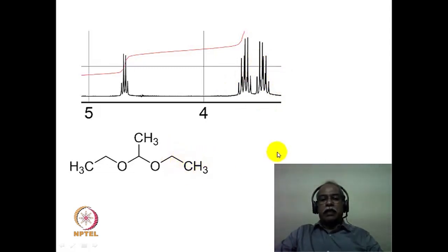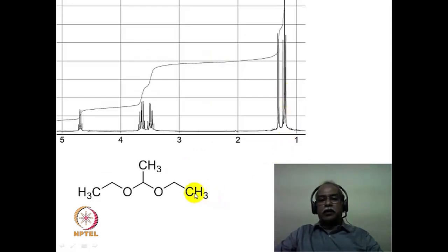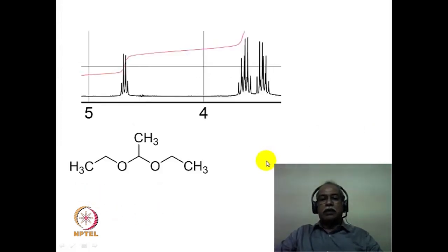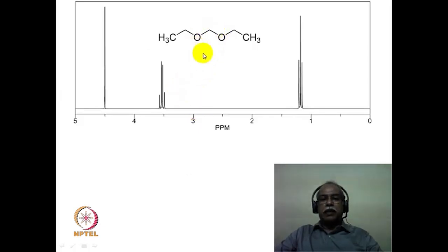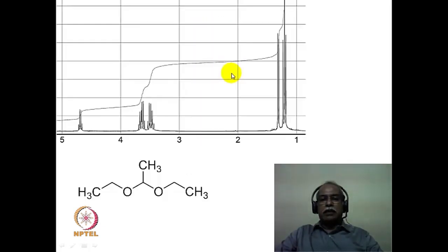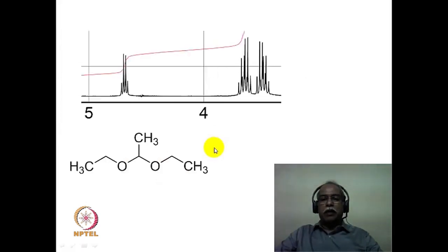The CH3 appears as a simple triplet. Both the ether CH3 groups are identical, and both of them appear as a single triplet of 6 hydrogen intensity. This example essentially illustrates that a small perturbation — introducing a methyl group — causes a fairly large change in the NMR spectrum in comparison to a more symmetrical structure. The less symmetrical structure becomes a complex spectrum, and a wealth of information is obtained because of this complexity.